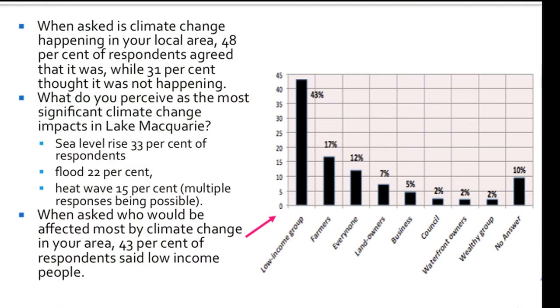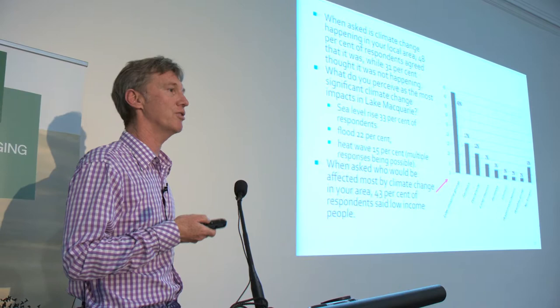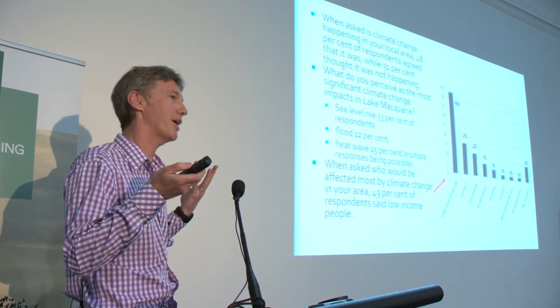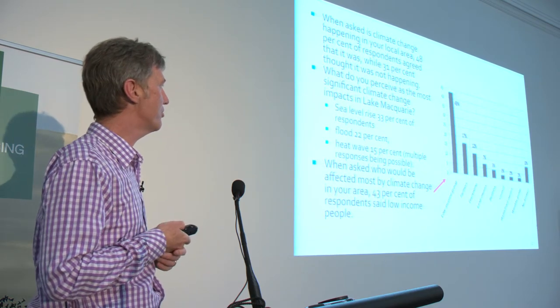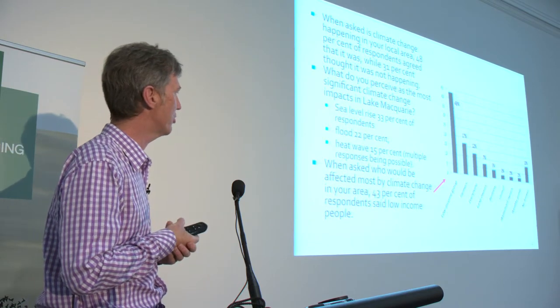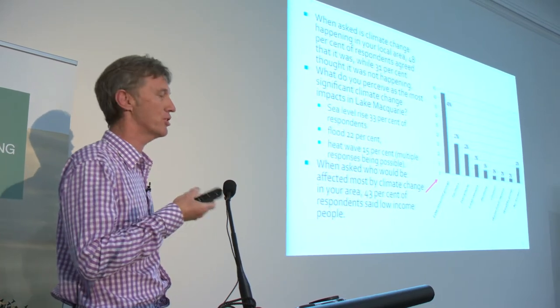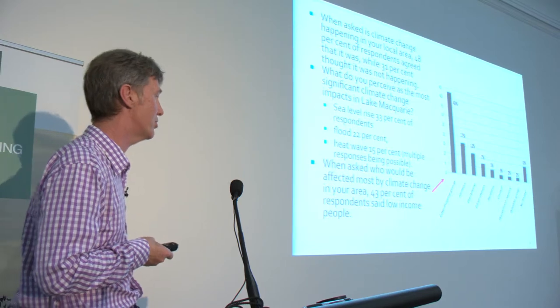When asked if climate change is happening, 48% of the respondents agreed it was, but 31% thought it wasn't. We're dealing with an older population in many cases, and the demographics of the two suburbs are very different, so there's a lot of denial going on — roughly a third of the people don't think climate change is happening. What do you perceive as the most significant climate change impacts? Sea level rise is recognised by about a third of those who do recognise it as important; flooding by about a fifth; heat wave is also high up there. When asked who'd be most affected, 43% thought it was actually a low-income group — a pretty good call. There's very much inequity about who's most likely to be affected, and at a global scale it's usually the people who haven't contributed to the causes of anthropogenic climate change.